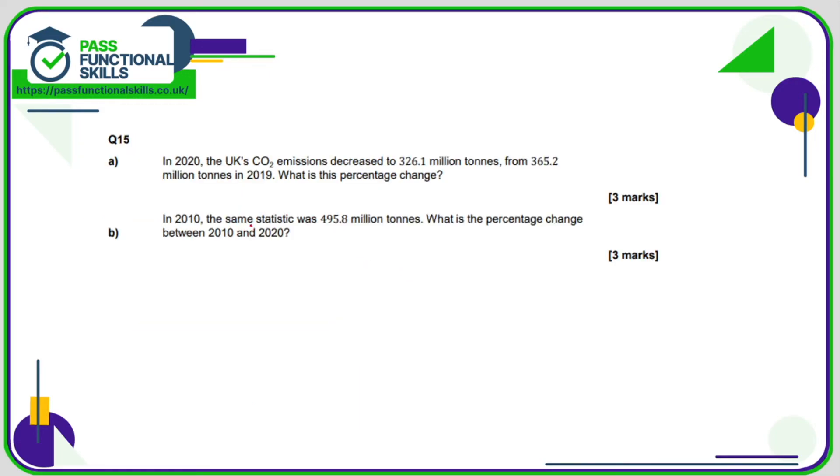Question 15, so we are working out the percentage change. Now the percentage change is the difference divided by the original amount multiplied by 100. So first of all, we need to work out the difference between these two values, which is easy enough on a calculator. So that's 39.1, and it was originally 365.2.